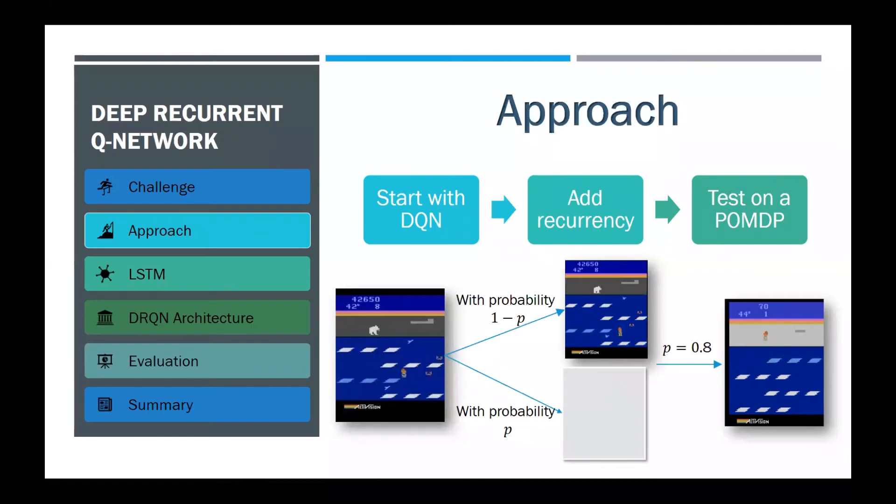The author's approach was to modify just a small part of the DQN network so they can focus on the effect of the added recurrence. I will explain the modification in the next slide. In order to test the performance of the new DQN, they also presented a method that converts MDPs to POMDPs, flickering games.